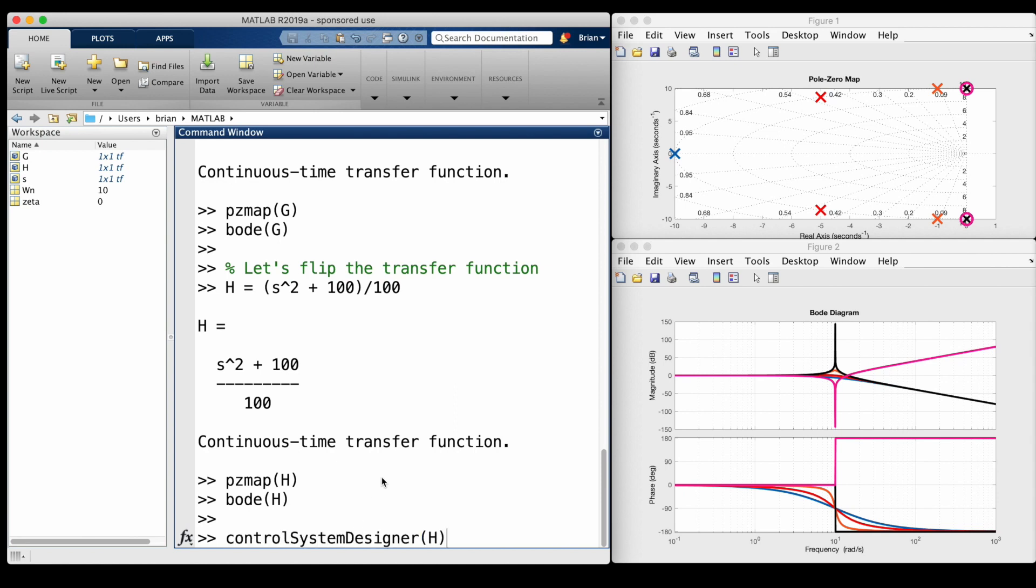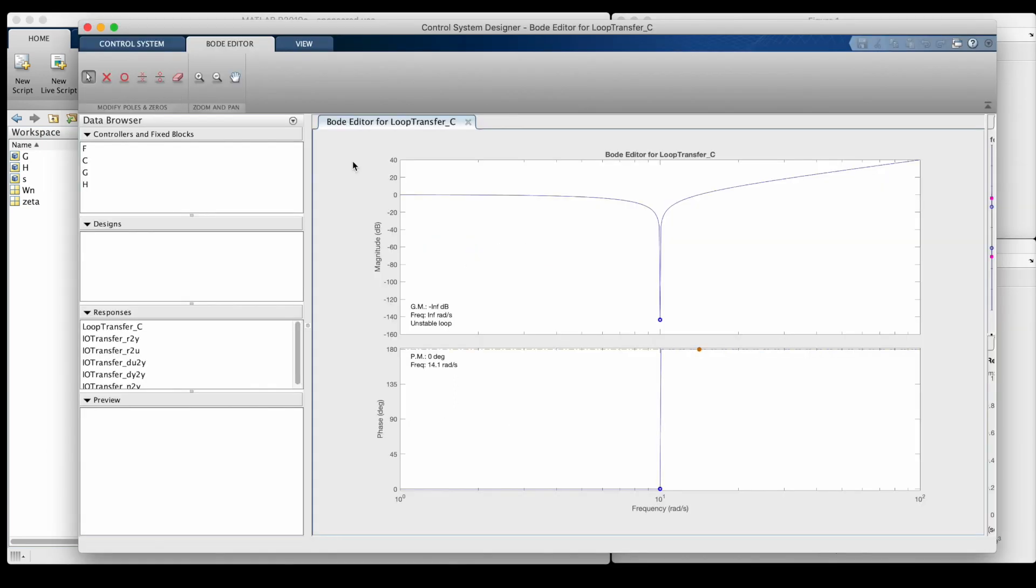Well, let's open up the Control System Designer app with our transfer function H, and use the Bode Plot Editor so that we can see real-time how adding poles affects the frequency response.